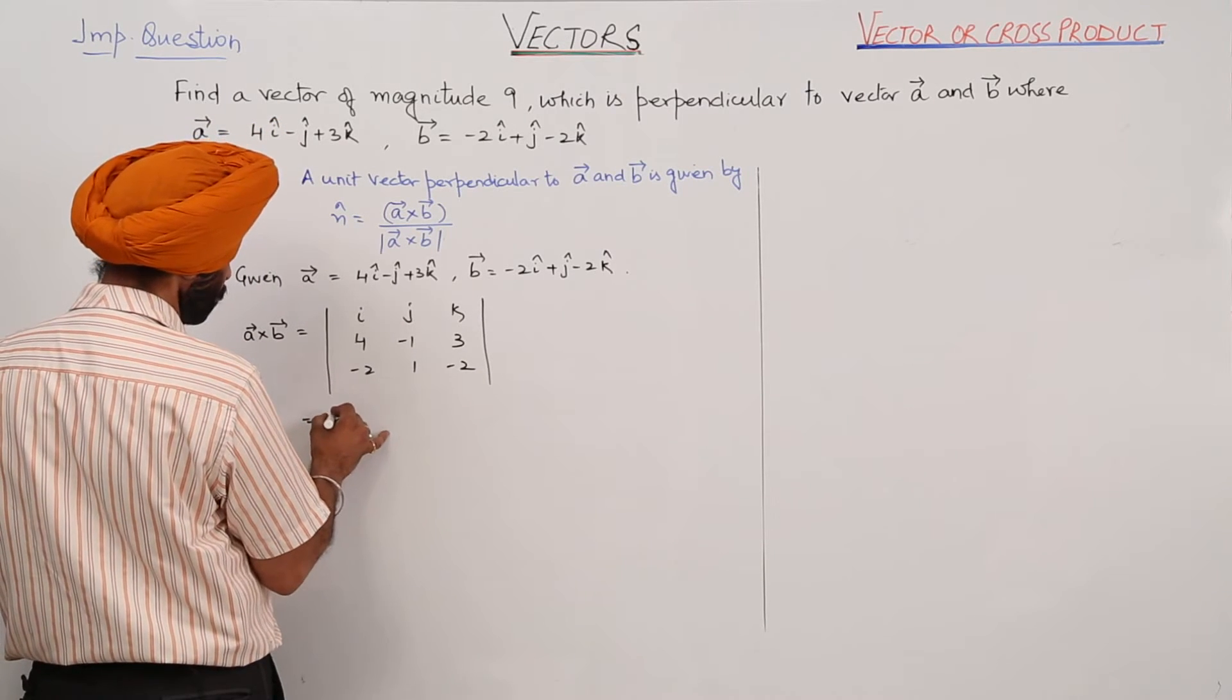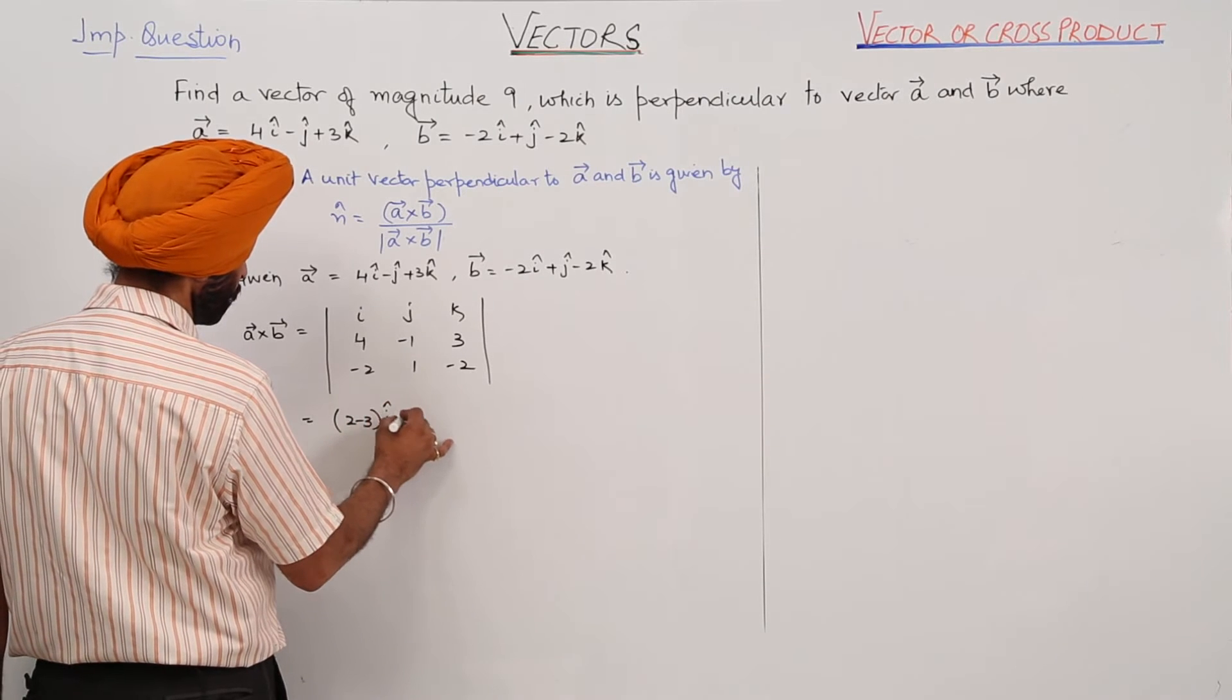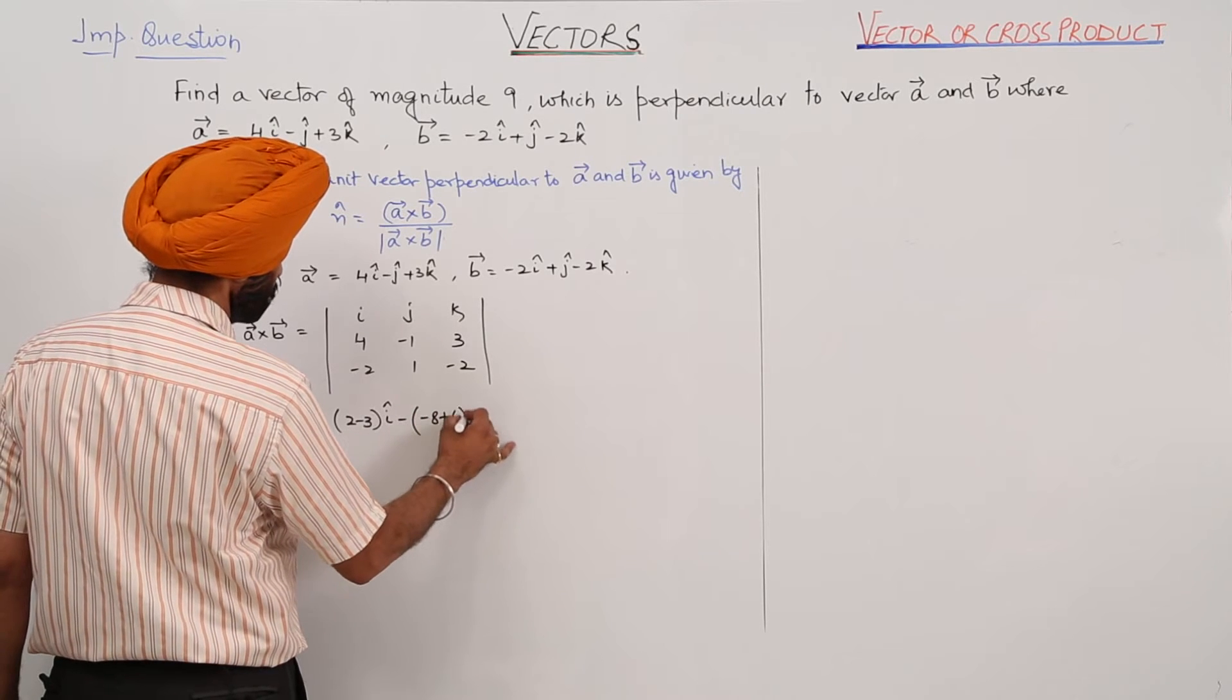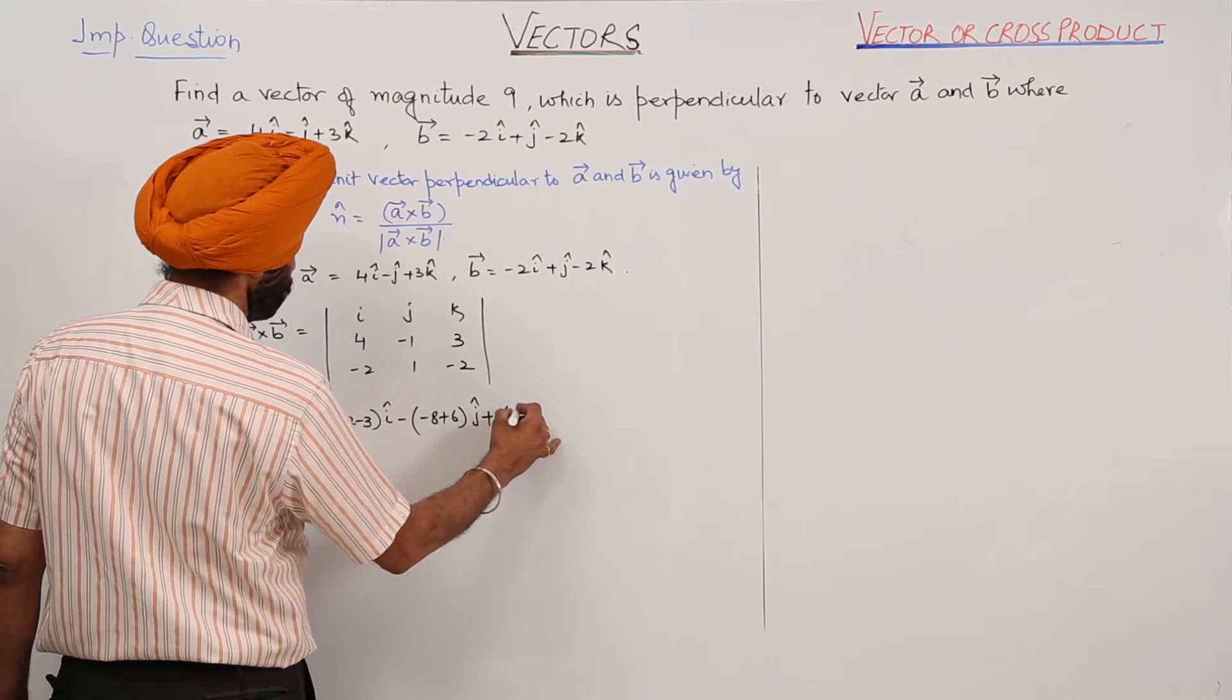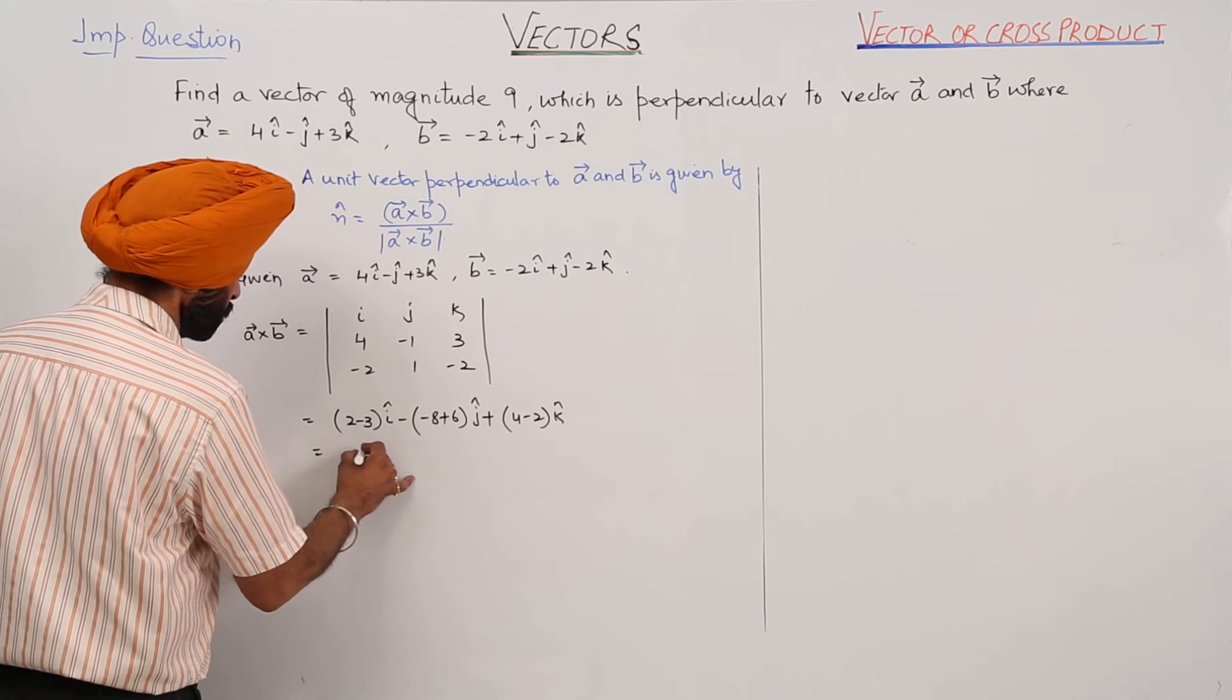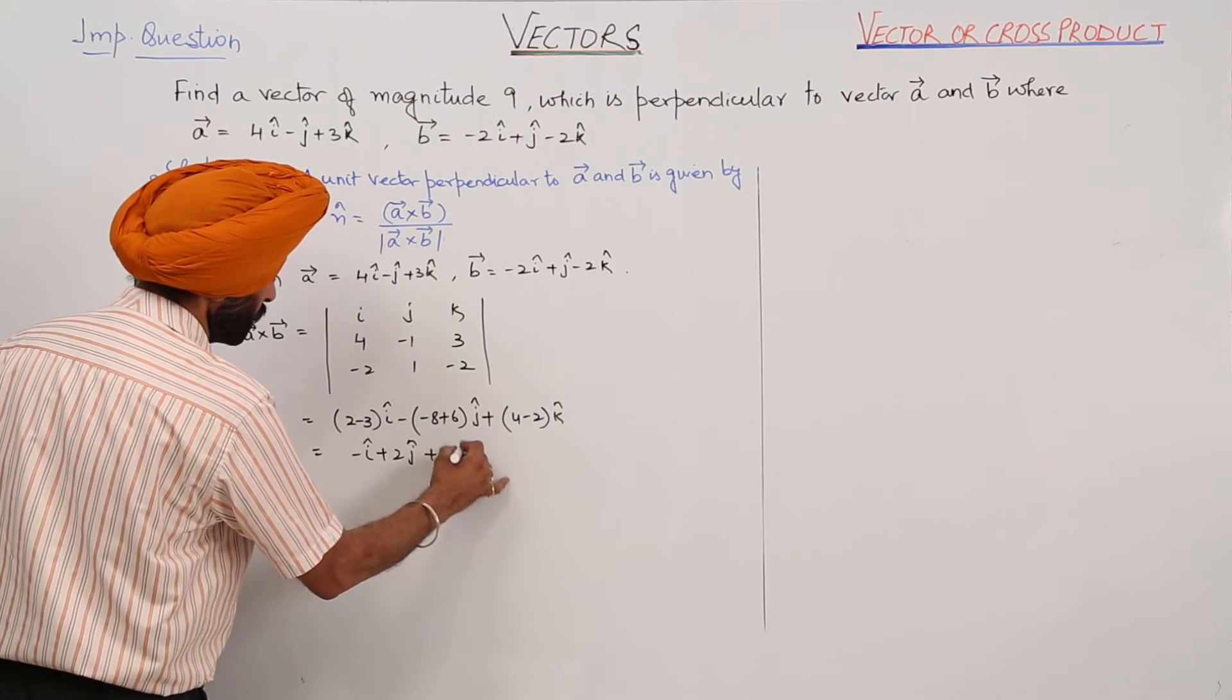This gives us (2 minus 3)i cap minus (minus 8 plus 6)j cap plus (4 minus 2)k cap, which equals negative i cap plus 2j cap plus 2k cap.